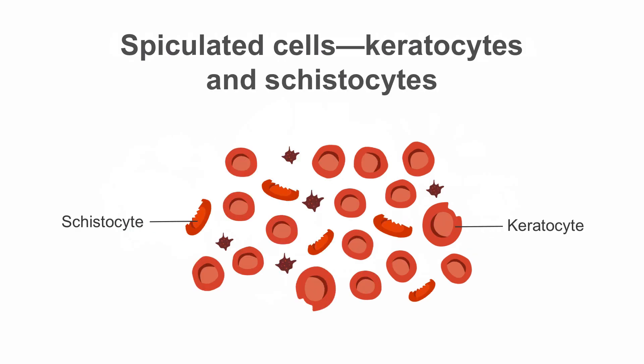Keratocytes usually have a pair of spicules, and they are mainly seen in microangiopathic hemolytic anemia and renal disease. Schistocytes, which represent fragmented red cells, are seen in microangiopathic hemolytic anemia. Examples of microangiopathic hemolytic anemia include disseminated intravascular coagulation (DIC), thrombotic thrombocytopenic purpura (TTP), and hemolytic uremic syndrome (HUS).